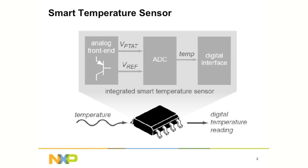The accuracy of the measurement depends on many factors, like internal mismatches and semiconductor processing tolerances. Typically, the accuracy of the temperature sensor is plus or minus 2 degrees centigrade.